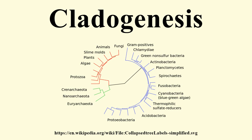Cladogenesis is in contrast to anagenesis, in which an ancestral species gradually accumulates change, and eventually, when enough is accumulated, the species is sufficiently distinct and different enough from its original starting form that it can be labeled as a new species. Note that here the lineage in a phylogenetic tree does not separate.